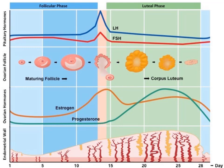In the luteal phase, the ruptured follicle develops into a slowly degenerating corpus luteum. The corpus luteum secretes high levels of progesterone as well as lower levels of estrogen. Estrogen and progesterone act on the uterus to thicken the endometrial lining, which — if there's fertilization — will result in preparation for a pregnancy. Additionally, estrogen and progesterone inhibit the secretion of FSH and LH, preventing any follicles from developing further. In menstruation, if fertilization occurs, the developing embryo will implant in the endometrium and release hormones to sustain the corpus luteum.